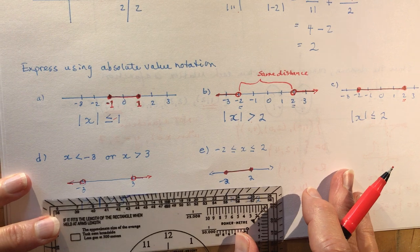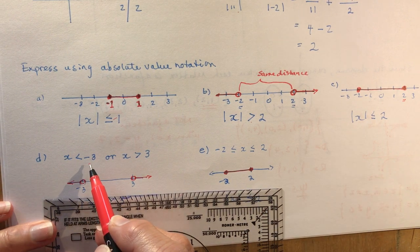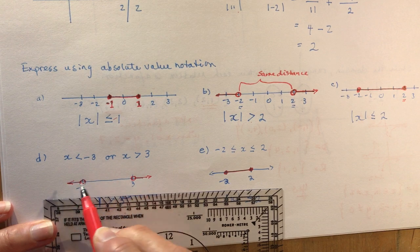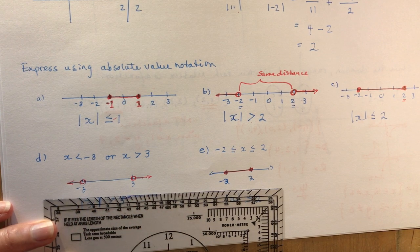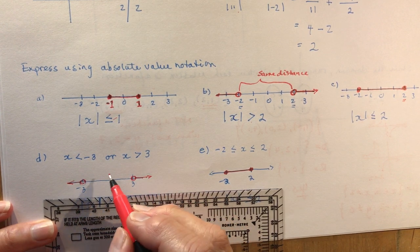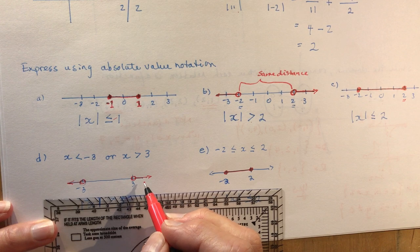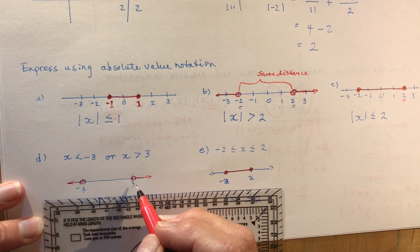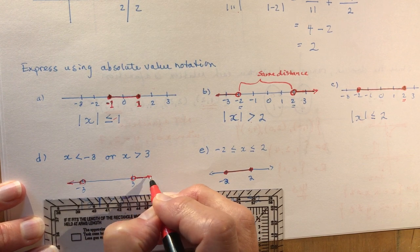The last two I have here: x is less than negative 3 or x is greater than 3. That would look like this on a number line. Sometimes it might help you to draw it on a number line before you write out the absolute value notation. It's just a little easier to see if you're more of a visual learner.